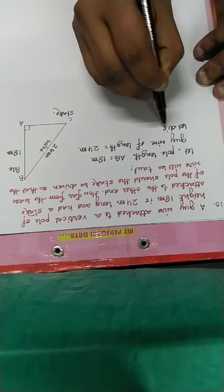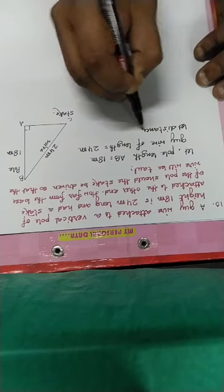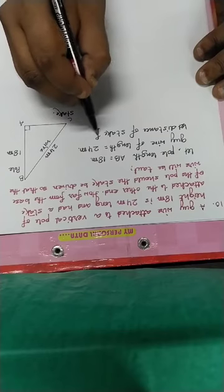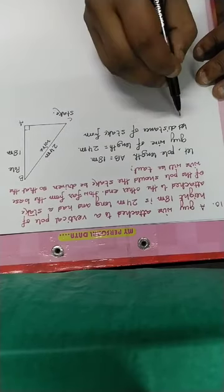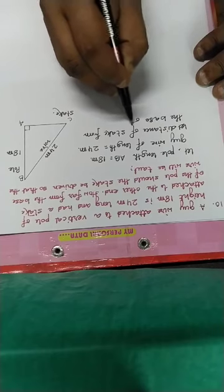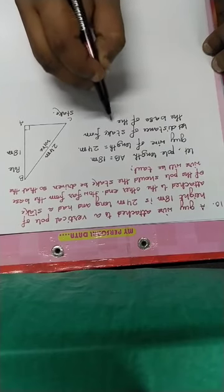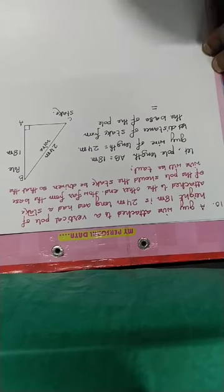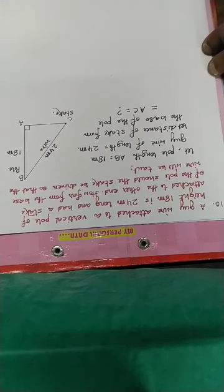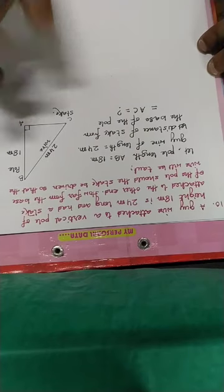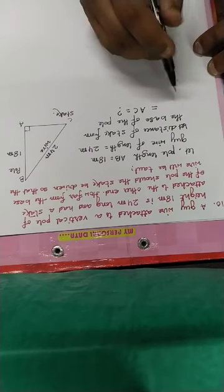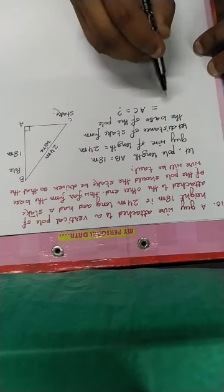The distance of the stake from the base of the pole is equal to AC. This is what we need to find.